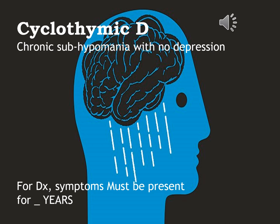The third disorder in the bipolar family is cyclothymic disorder, sometimes called cyclothymia — a chronic sub-hypomania in which the person never gets manic and never even gets fully hypomanic. There is no major depression. It must be present for a full two years. Think of it as chronic low-grade mania.